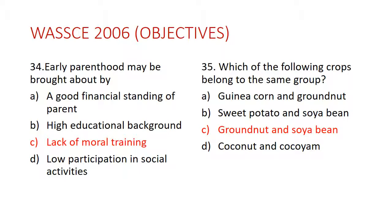Question 34: Early parenthood may be brought about by — the answer is C — lack of moral training. It cannot be brought about by good financial understanding of parents; you can have rich parents whose children still end up in teenage pregnancy. So it is lack of moral training as well as discipline.